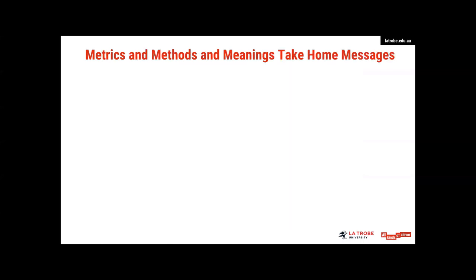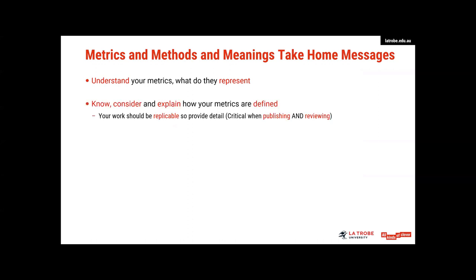So I want to sum up my take home messages to you guys. The main one is understand your metrics, know what they represent. I think this one's really important, know, consider and explain how your metrics are defined. Especially if you're going to publish it, your work should be reproducible. So you need to provide that detail. And that falls on both the author, but also the reviewer, if you're reviewing a paper, you need to ask the authors to put this information in. It's really important so that we can then compare their data to others, but also we can reproduce or understand what they're doing. Alternative approaches to how you define your metrics are completely fine. There is not just one way of doing things, but you need justification on why you're doing it. And you need to be able to think clearly on what question you want to answer, given your current method.